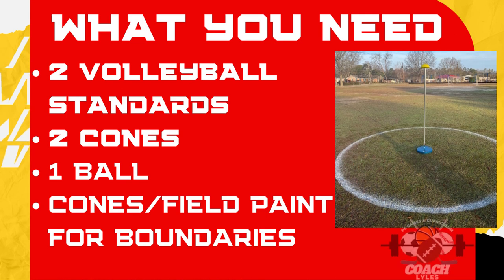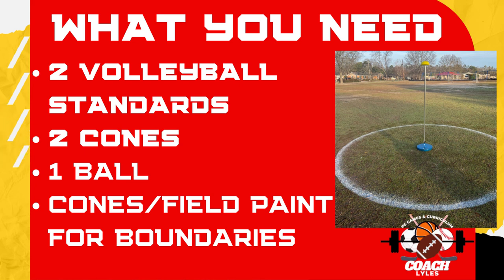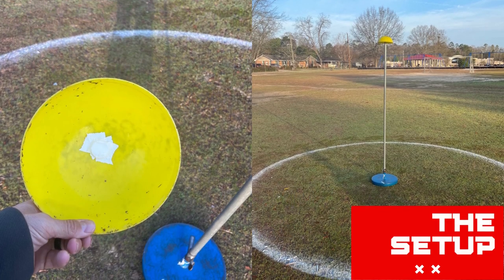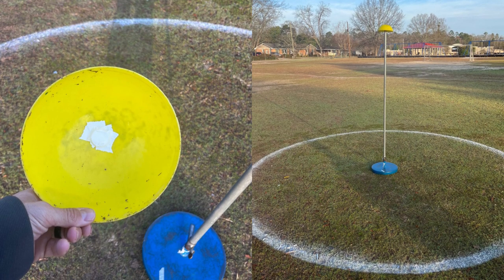What you'll need to play angle ball: if you do not have actual angle ball goals, you can do like we did — we used two volleyball standards and took two cones, placing one cone on each standard for students to knock down to score a point. You'll need one ball to play with and cones or field paint to mark the boundaries. We put a little piece of tape around the hole so the cone could sit on the standard and wouldn't slide all the way down.